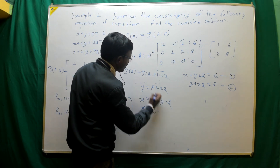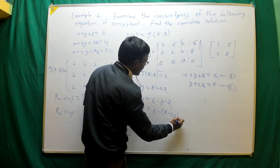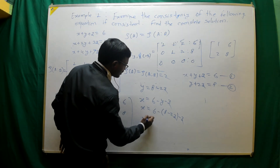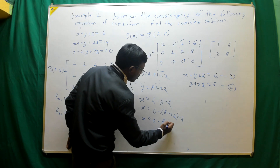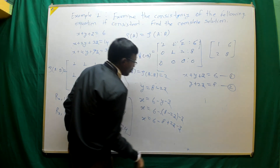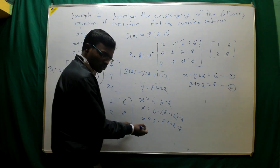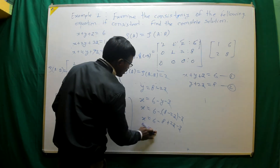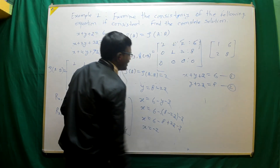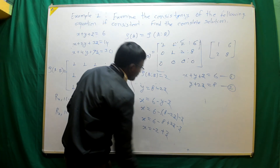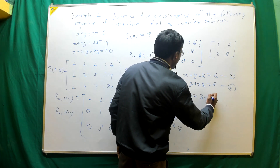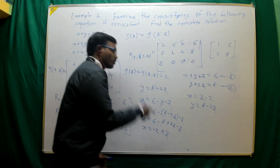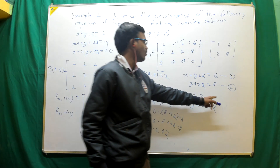So x equal to 6 minus (8 minus 2z) minus z. Expanding: x equal to 6 minus 8 plus 2z minus z, which gives x equal to z minus 2. Therefore the value of x is x equal to z minus 2, and the value of y is y equal to 8 minus 2z.